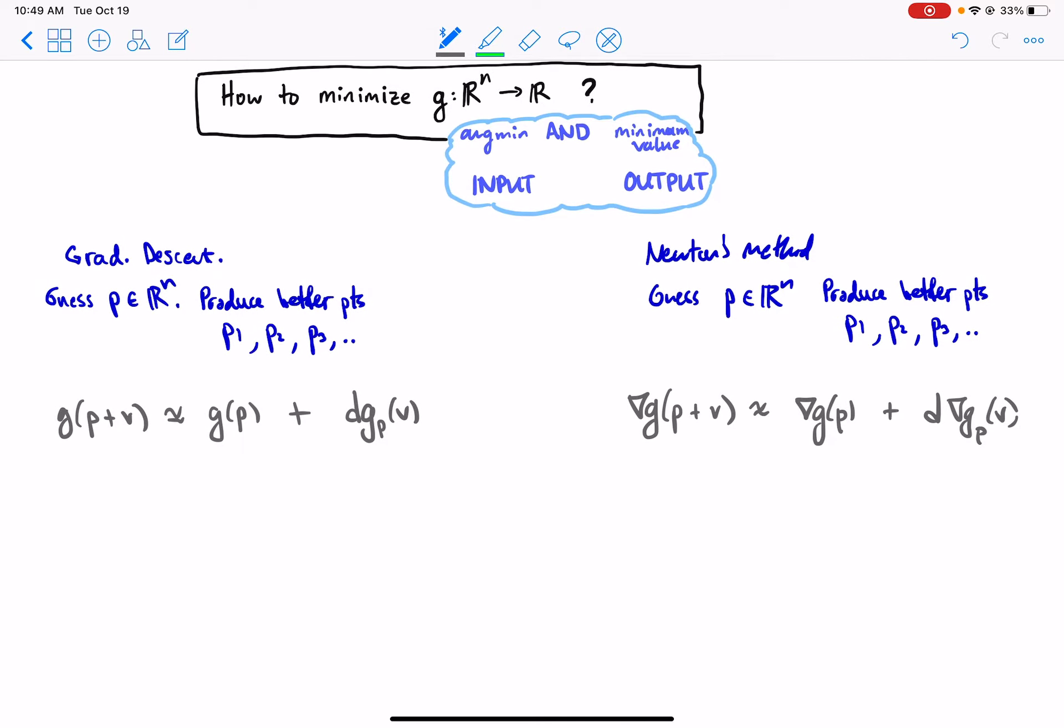So now why is this gradient descent? Well, because the derivative of G—since G has just one real number output, its derivative is actually a dot product with the gradient evaluated at that point. The derivative at the point P is a dot product with the gradient at that point. So all we have to do is compute the gradient for gradient descent.